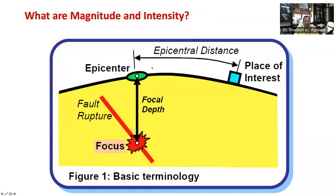The surface distance from the epicenter to the point of interest is called epicentral distance. A number of smaller earthquakes normally occur before and after a big earthquake. The big earthquake is called the main shock, and the earthquakes occurring before and after are called foreshocks and aftershocks respectively.